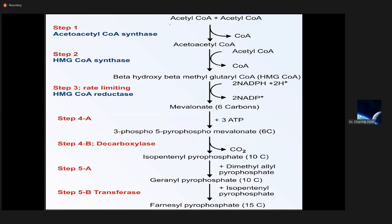In the pathway, the starting materials are two acetyl-CoA molecules. The first three steps are important to remember. The first enzyme is acetoacetyl-CoA thiolase — no ATP is required, and one coenzyme A molecule is removed. The product is acetoacetyl-CoA, and then a third molecule of acetyl-CoA is added.